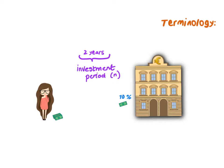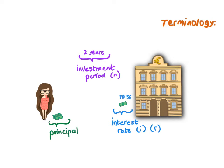Secondly, we have the interest rate that the bank offers us. The interest rate can either be for good interest or bad interest when you loan money. The interest rate is abbreviated as I, and sometimes also as a little R for rate — so either I for interest or R for rate. The original amount that Amber invested is called the principal amount. In the beginning she had 7,000 rand — that was the principal amount she invested. And then the little extra bit that was added on, that was her interest.